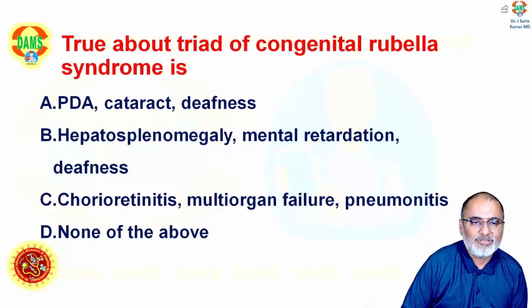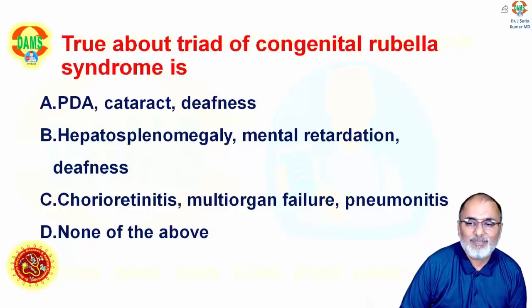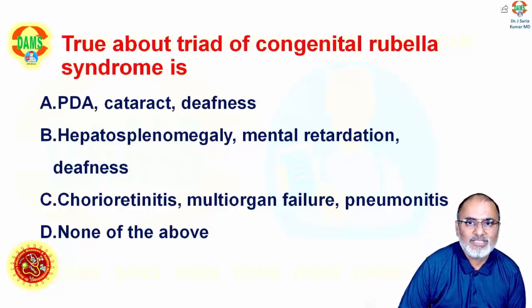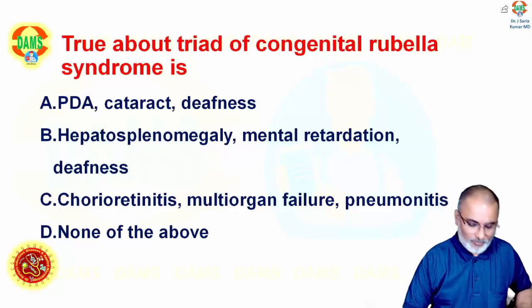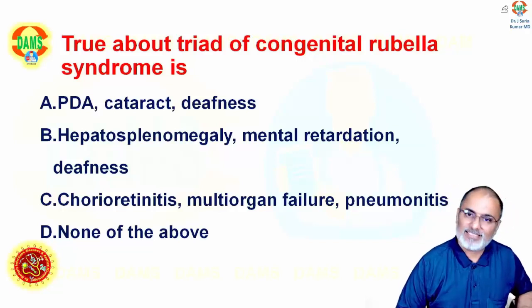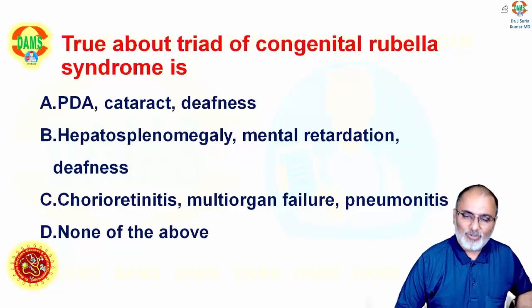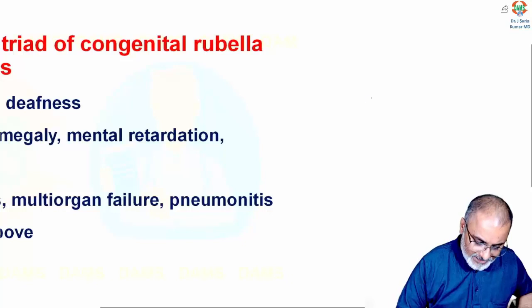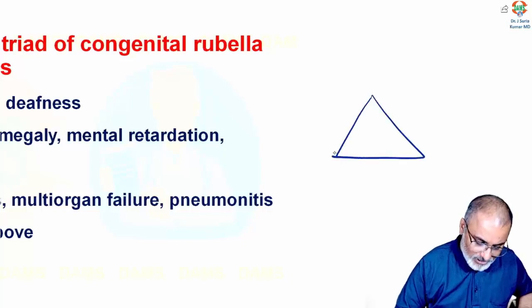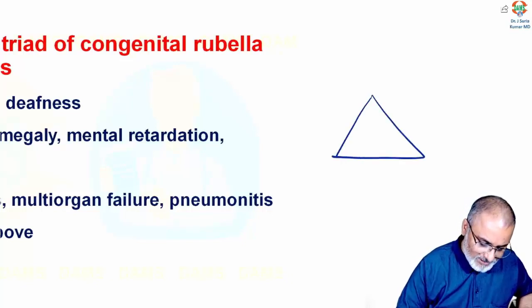Hi, this was the question asked in the previous year: what about the triad of congenital rubella syndrome, equal to CRS? So congenital rubella syndrome is a triad, and there is a mnemonic called CCC.